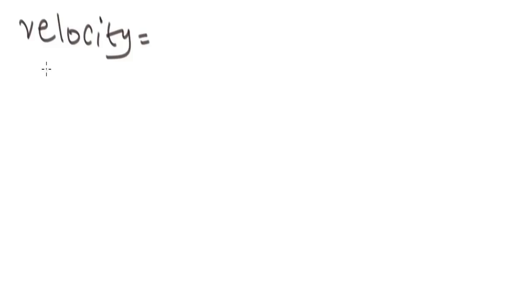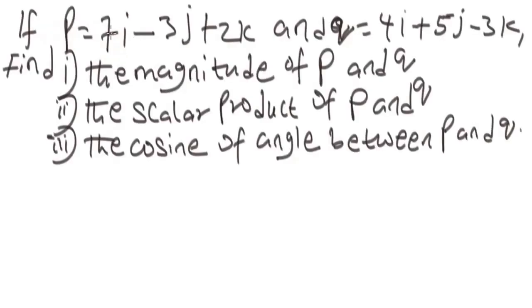Now let's look at unit vectors in two or three dimensions. Let's look at this question. Vector P equals 7i - 3j + 2k and vector Q equals 4i + 5j - 3k. Find i) the magnitude of P and Q, ii) the scalar product of P and Q, and iii) the cosine of angle between P and Q.